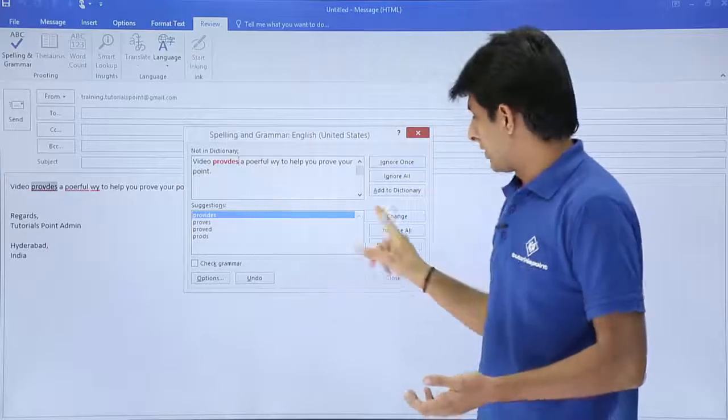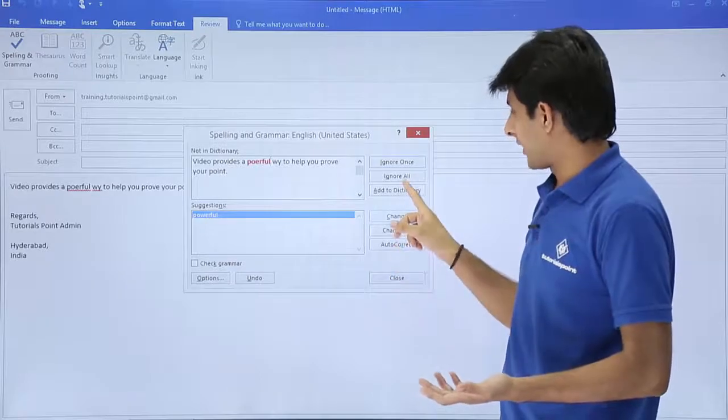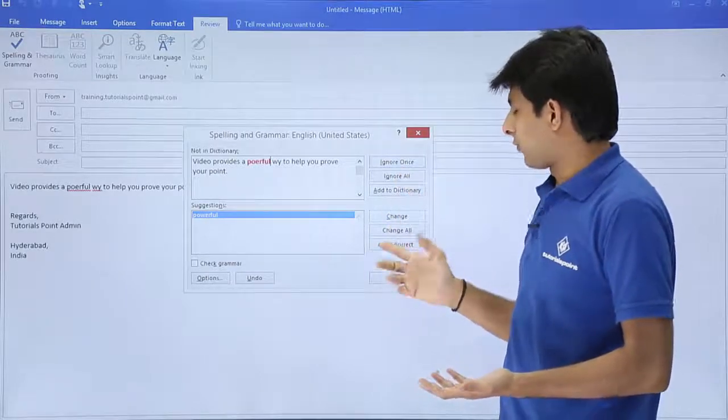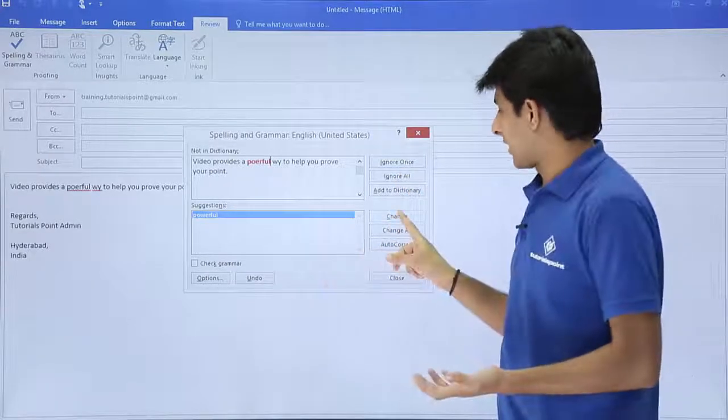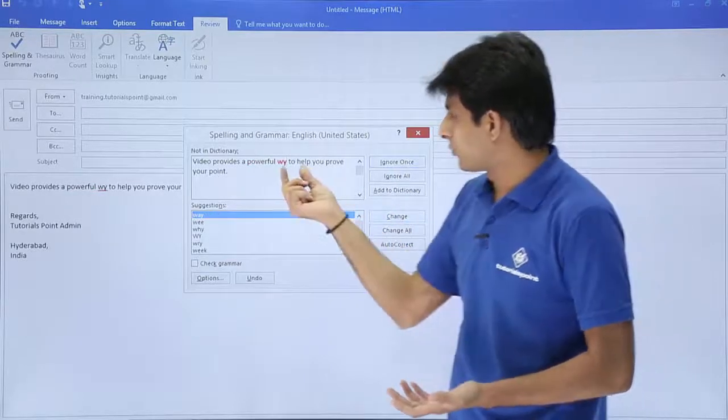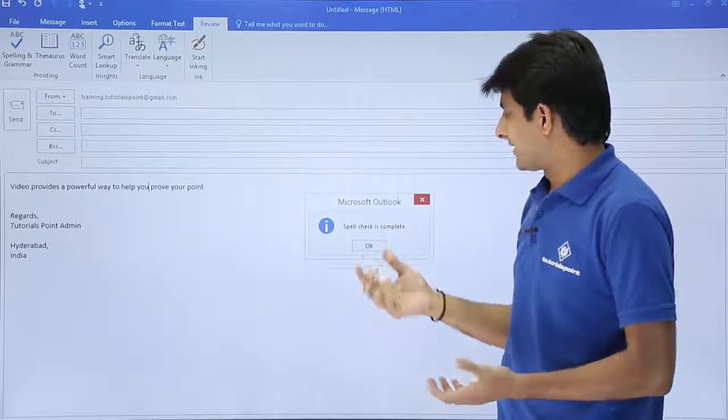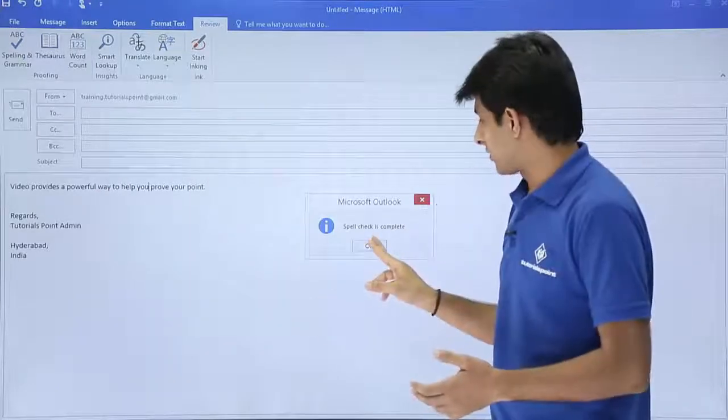Same way, 'provides' - click on change. Same way 'powerful'. If you want, you can ignore like this - ignore, ignore all - or if you want, you can keep on changing. Finally I can close. There's one more word which is 'wy', so I'll select 'way', click on change. It says spell check is complete and you can click OK.